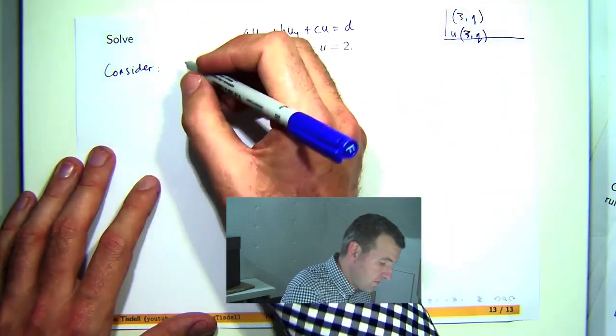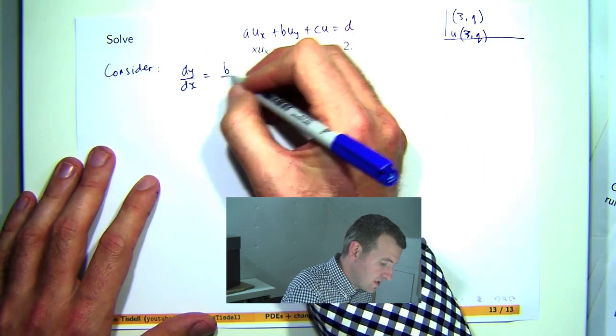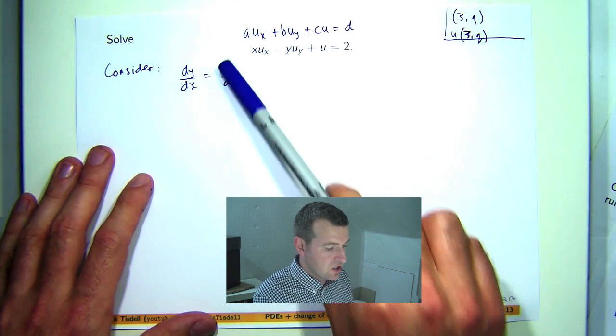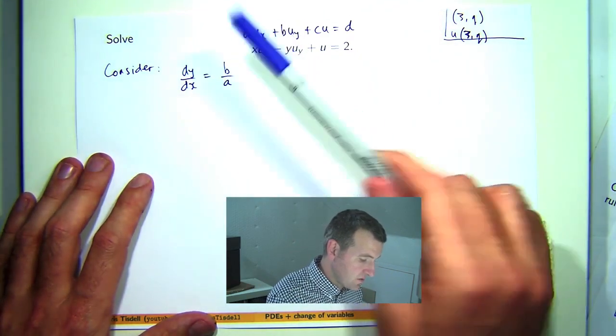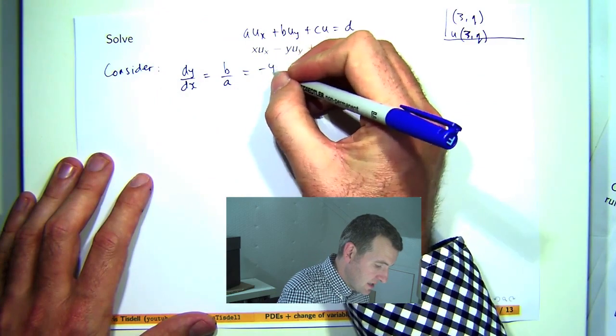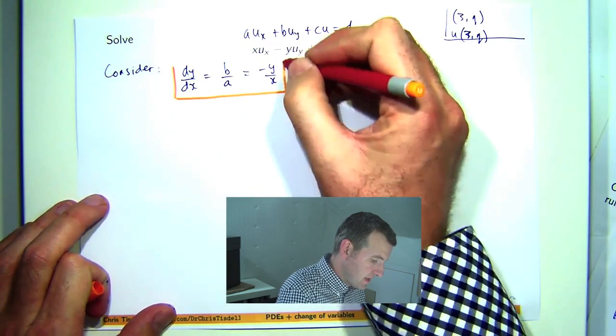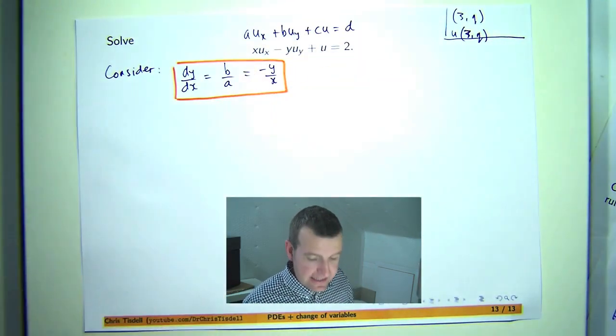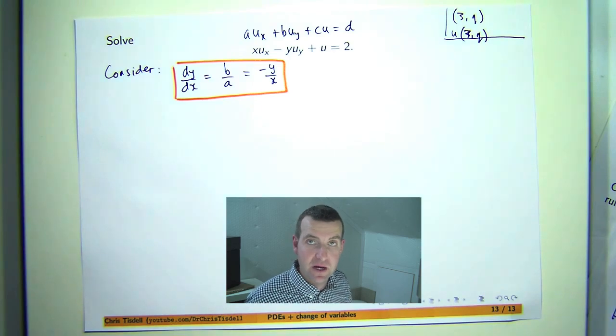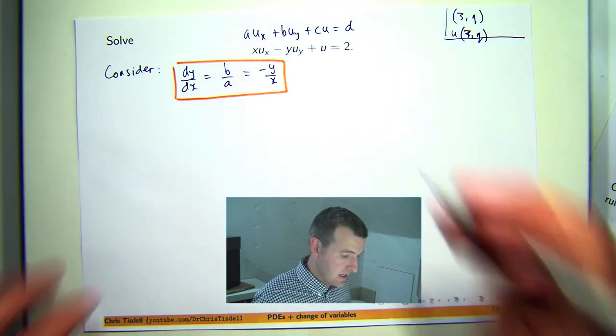Now from a previous video we discussed how to choose or to construct these new variables. One of them is constructed from the following ordinary differential equation which is just the ratio of the function b over the function a. So in this context it's negative y on x. This could be a non-linear problem but in this case it's a nice linear first order ODE which we know how to solve. It's also separable.